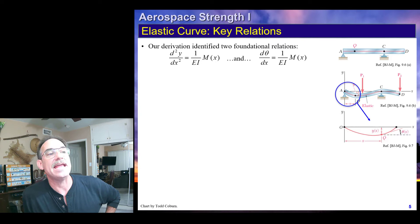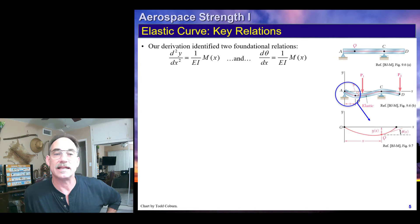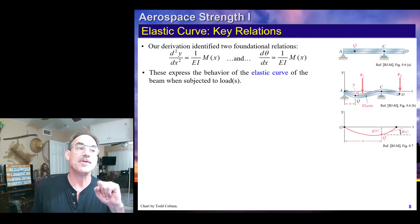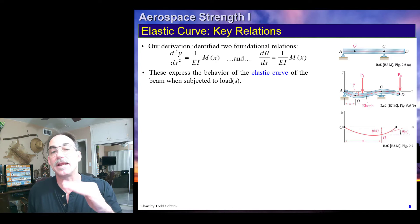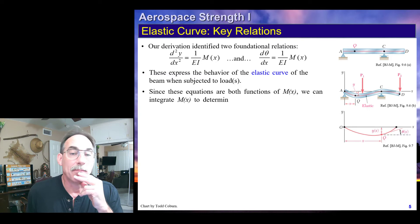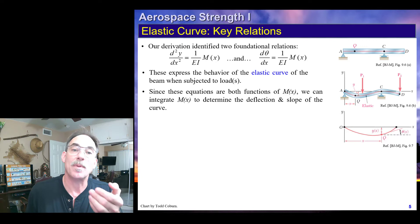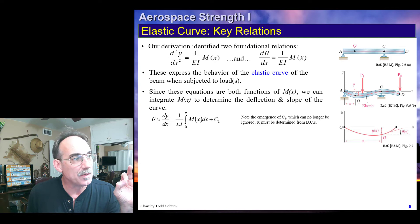Focusing on a little segment of beam from a to q, it looks like this. We can see both the deflection and the slope shown in that little blow-up picture. These equations express the behavior of the elastic curve because they tell us about its position, y, and its orientation, theta. These are both functions of M of x, and so we can actually integrate M of x to get the slope and then the deflection of the beam.